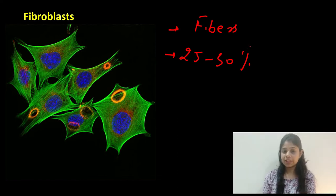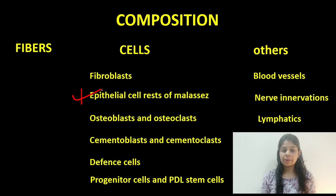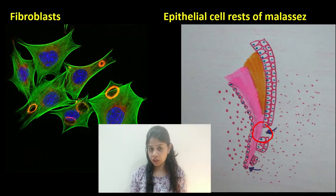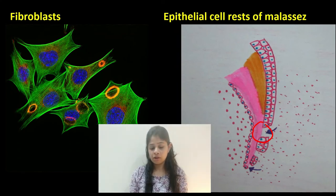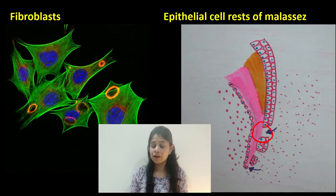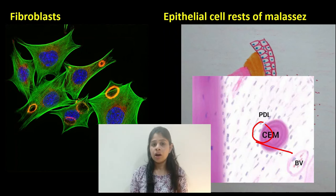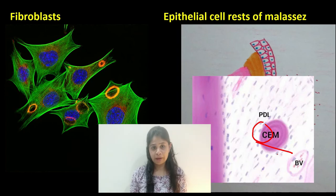The second subset of cells are the epithelial cell rests of Malassez. These are remnants of Hertwig's epithelial root sheath and are present as cells or strands attached to the cementum surface. In certain cases, these can undergo calcification and produce cementicles embedded in the periodontal ligament space. They also help to maintain the width of the periodontal ligament.